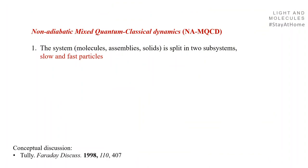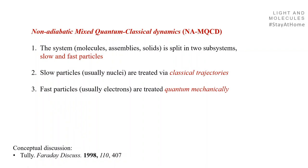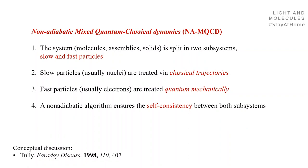In nonadiabatic mixed quantum-classical dynamics, the system — the molecule, the ensemble, the solid — is split into two subsystems: slow and fast particles. The slow particles, usually the nuclei, are treated via classical trajectories. The fast particles, usually the electrons, are treated by quantum mechanics. The nonadiabatic algorithm ensures self-consistency between both subsystems, exchanging information between them.